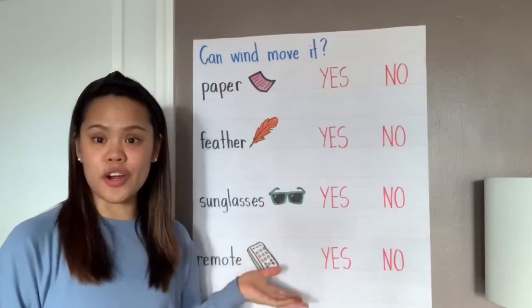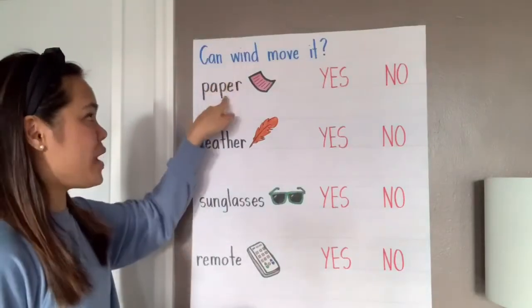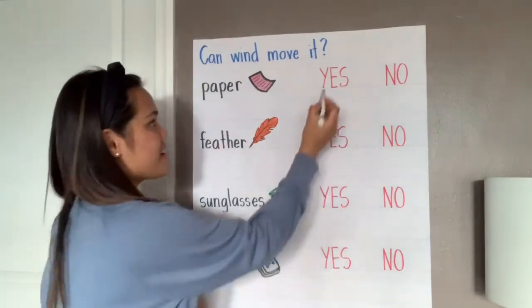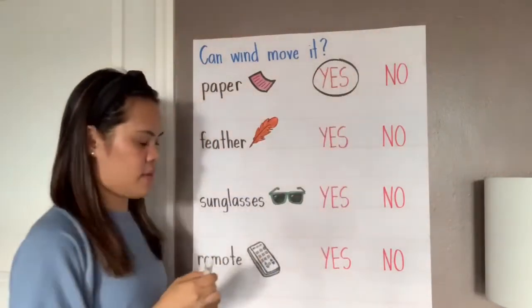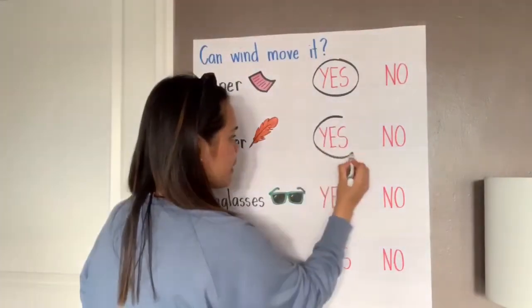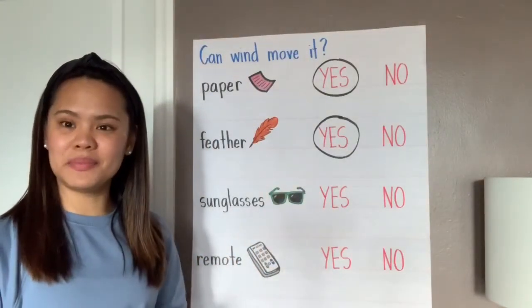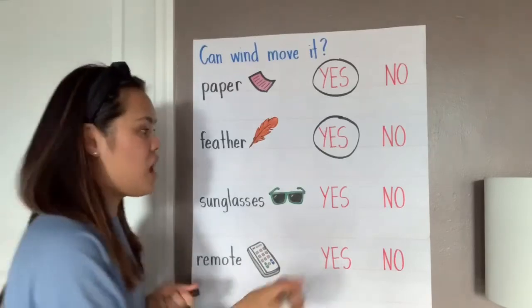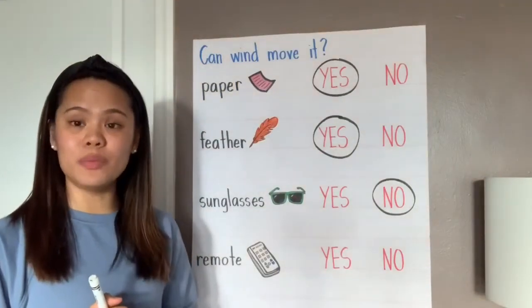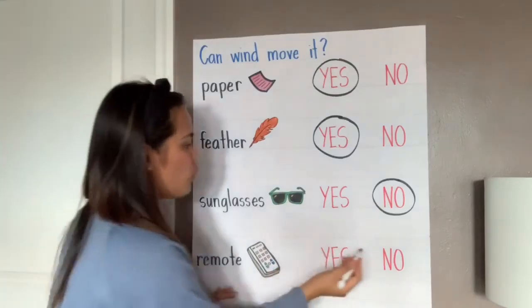Now let's go back to our chart. Let's answer the question with a yes or a no. Did the wind move the paper? You're right, that's a yes. Did the wind move the feather? That's right, that's a yes. Did the wind move the sunglasses? That's right, the wind did not move the sunglasses. Did the wind move the remote? You're right, the wind did not move the remote.